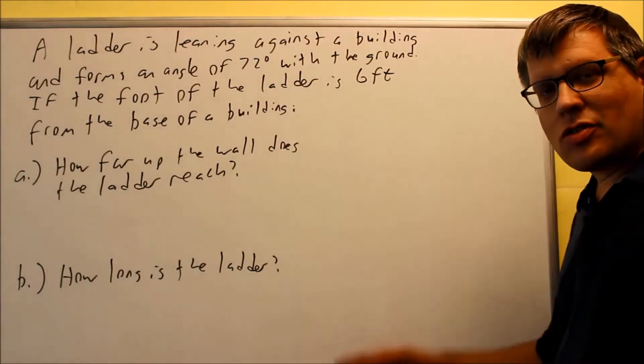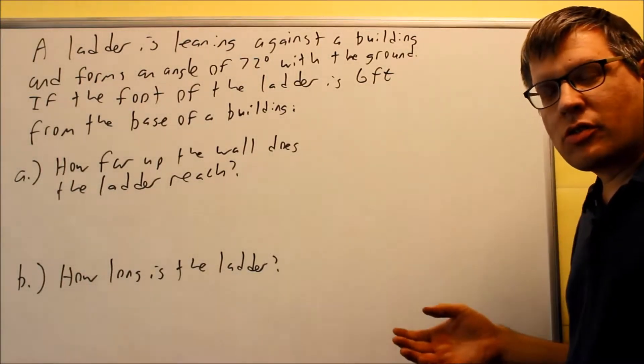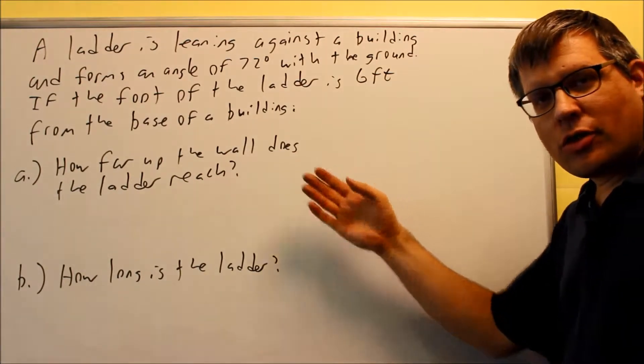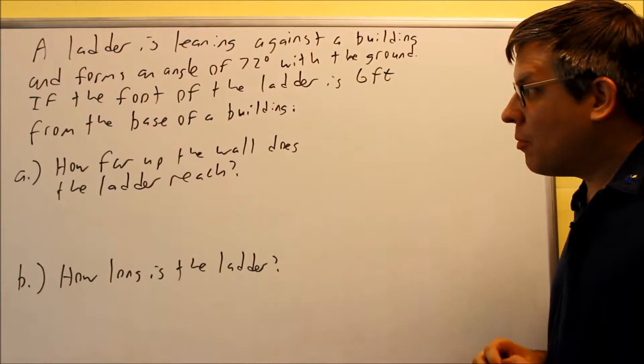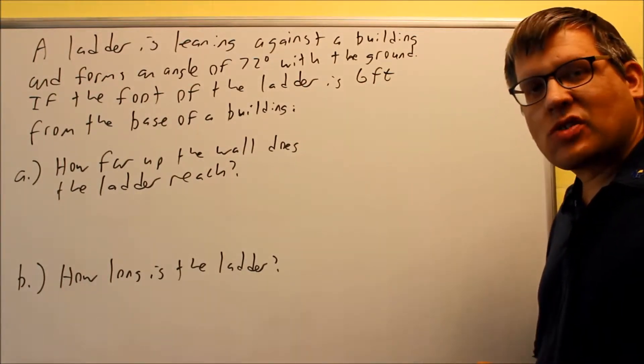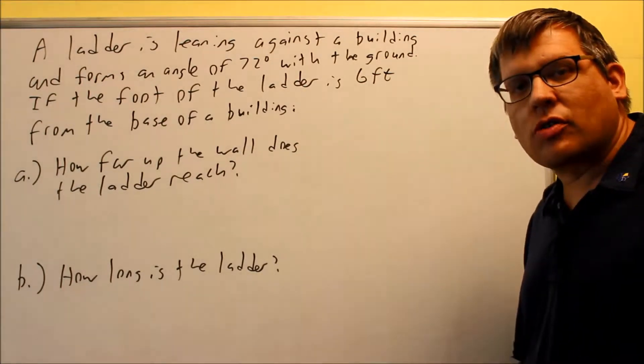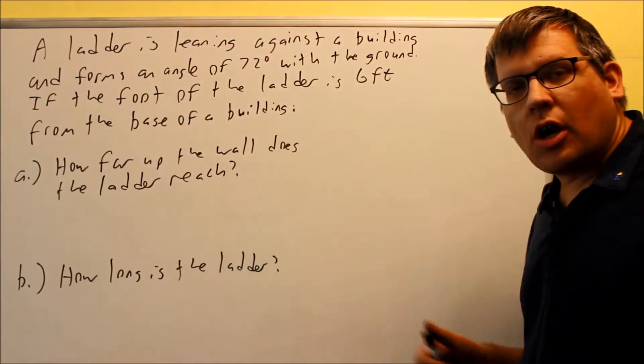Okay, we have a word problem to look at. This is the famous ladder problem that you'll see in almost all different trig textbooks. You have a ladder leaning against a building. So we're going to do this problem based off of a right angle. We still have to set up a right angle for this one and we're still going to solve it. We have two different parts here.